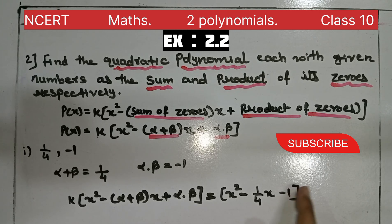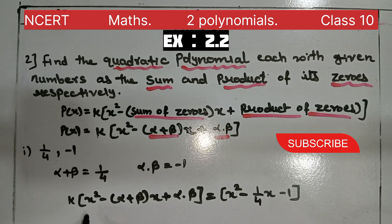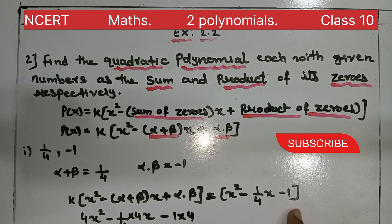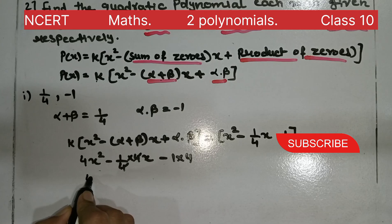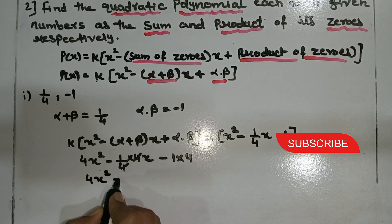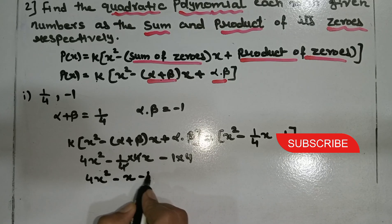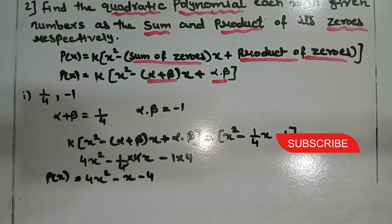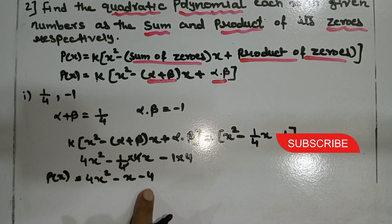To simplify, we multiply through by 4: 4x² - (1/4)·4·x - 1·4, which gives 4x² - x - 4. So the required quadratic polynomial is 4x² - x - 4.